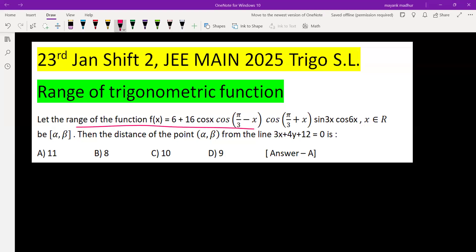Let the range of the function be alpha to beta, then the distance of the point from the line is what we have to find. So here we are going to use a formula, cos theta cos 60 degree minus theta.